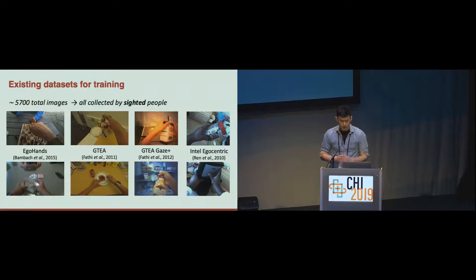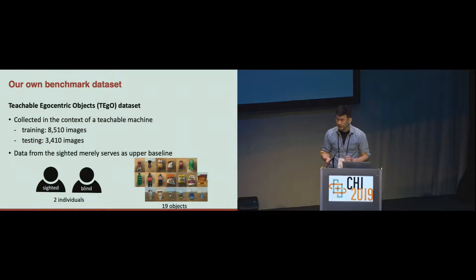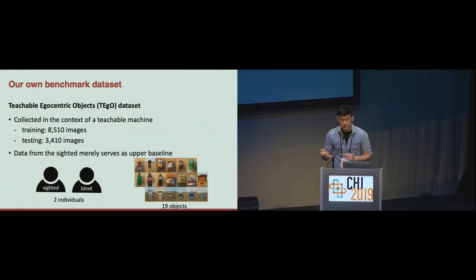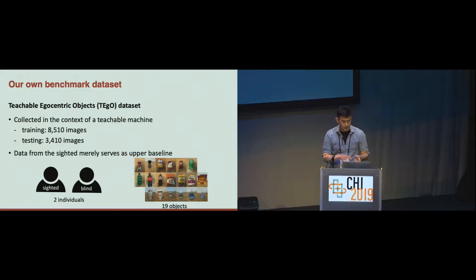The issue is that all these datasets are collected by sighted people, which may not represent the hand-object interaction of people with visual impairments. So we collected our own benchmark dataset, which we call Teachable EgoCentric Objects — TAGO for short. During this data collection, there were two individuals: one is sighted and another is blind. They collected images while interacting with 19 different objects. In total, we have more than 11,000 images in two different phases: training and testing. Please note that the data from the sighted person merely serves as an upper baseline for this object recognition system.